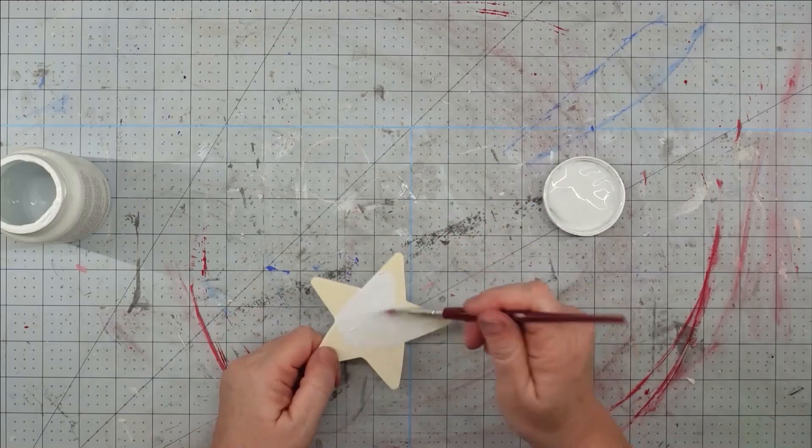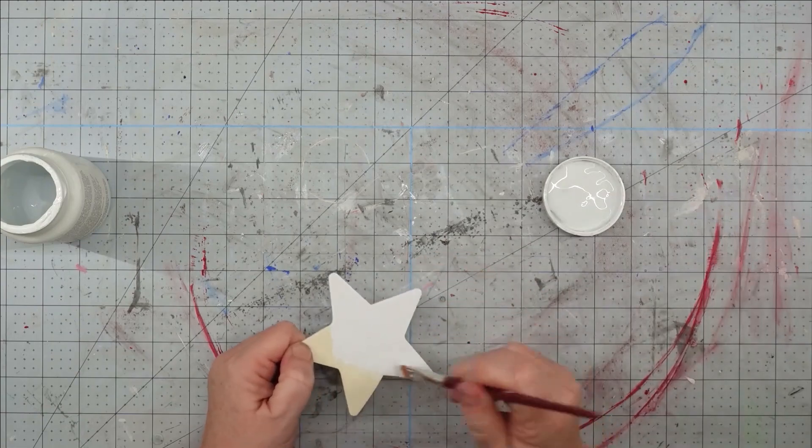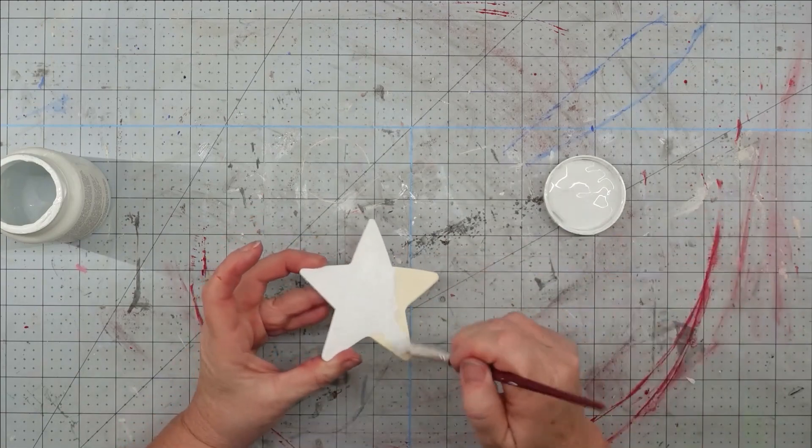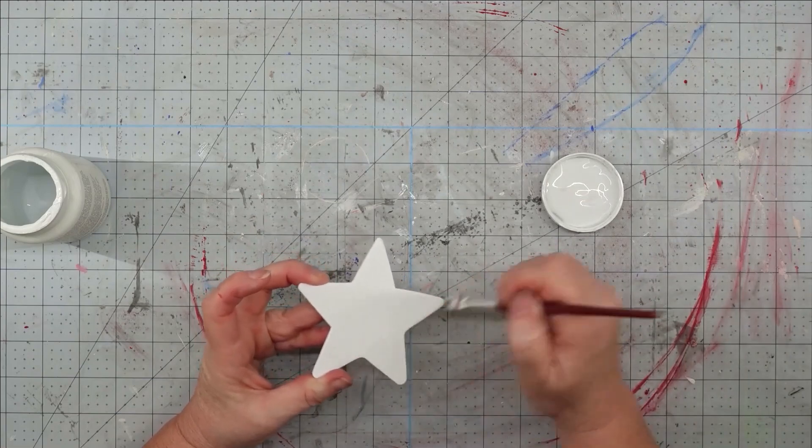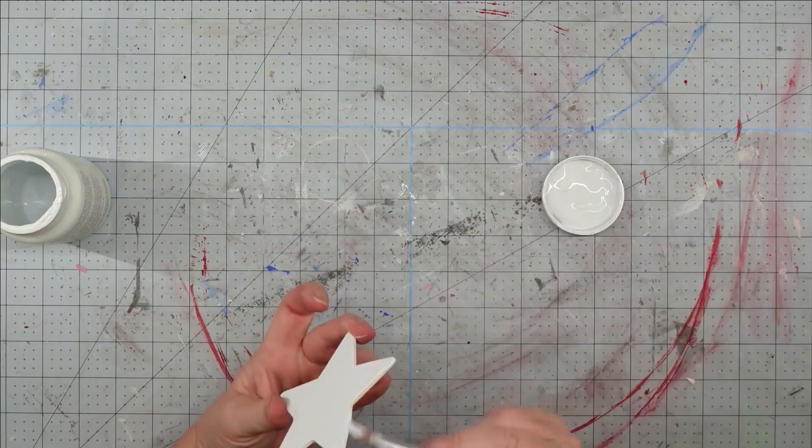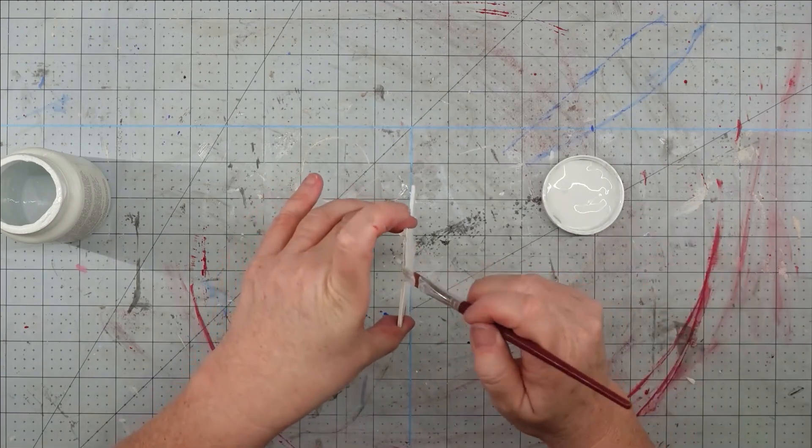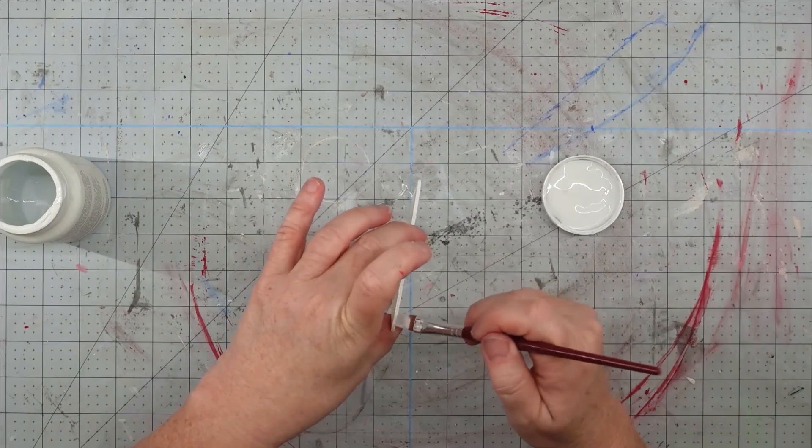So this is going to be a really simple project that I think would be perfect to do with the kids. The first thing I'm going to do is paint my star with my white Waverly chalk paint. I do make sure that I paint the front, the back, and the sides, because you're going to be able to see this from all sides when it's hanging on your tree. Once I get a good coat on it, we'll set it aside to dry.